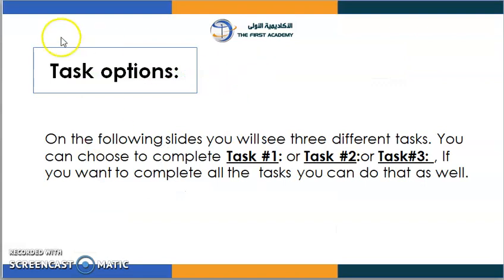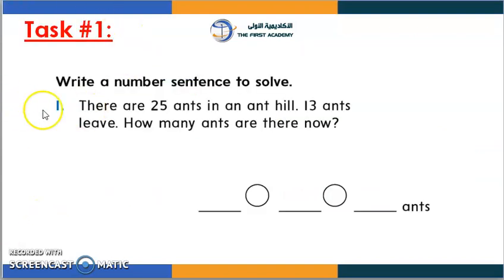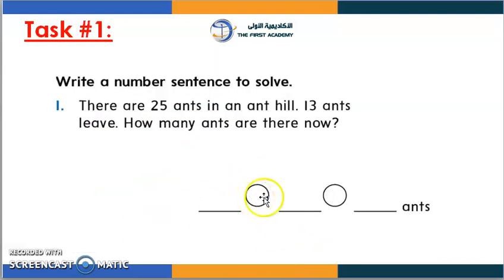Now we have task options. There are 3 tasks. If you want, you can solve all of them to challenge yourself if you understand the lesson, 2 if you mostly understand, and 1 if you don't fully understand yet. For our first task, I want you to write the number sentence to solve: there are 25 ants in an anthill and 13 ants left. How many ants are there now? Just like we did in the example — what's supposed to go here, here, and here?